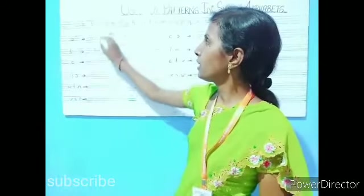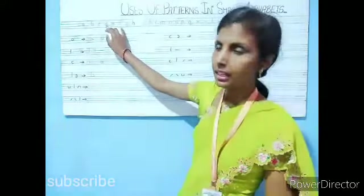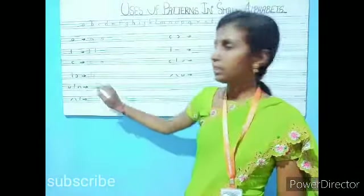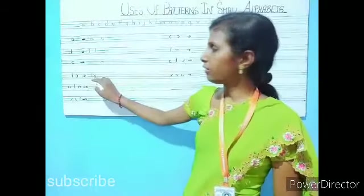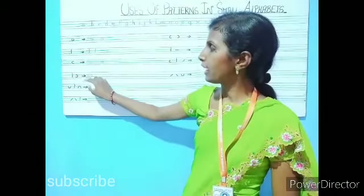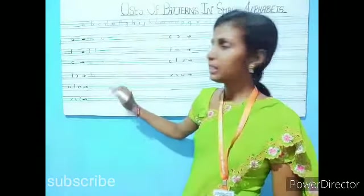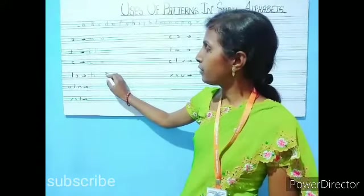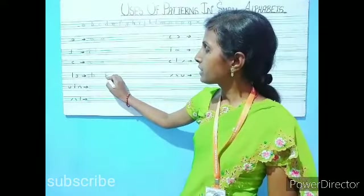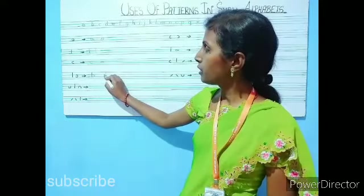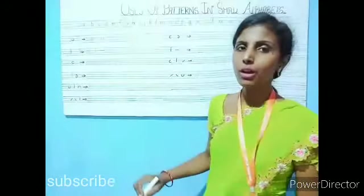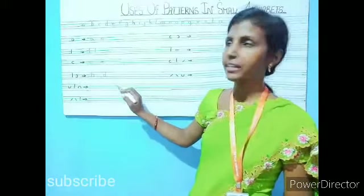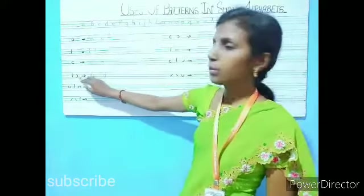Which other letter can we write? Small D — D will be the opposite of B. If we give the semi-circle the other way, it becomes D. We draw a standing line in lines one, two, and three, and then draw an opposite semi-circle in lines two and three. It becomes small D — both faces in opposite directions.